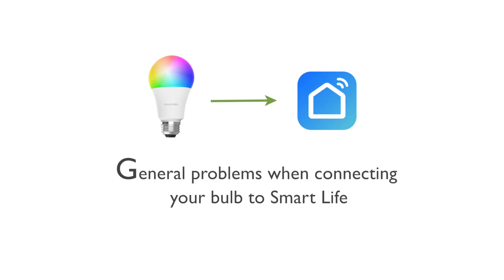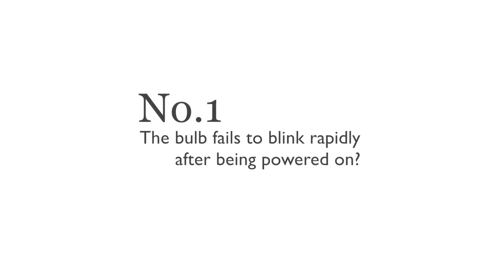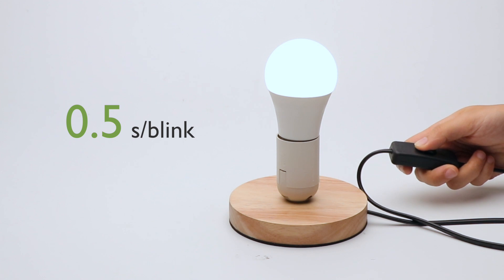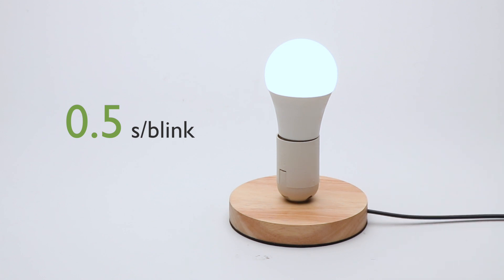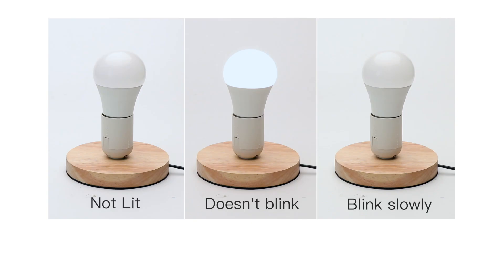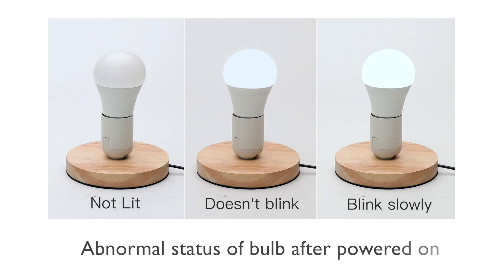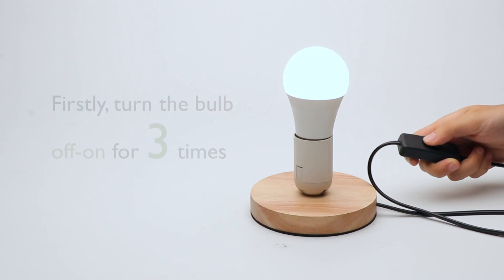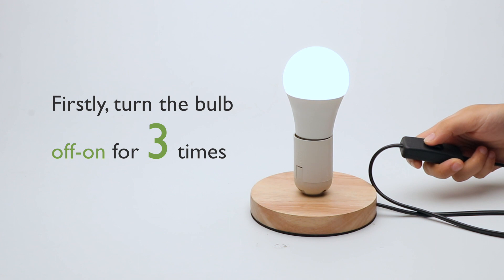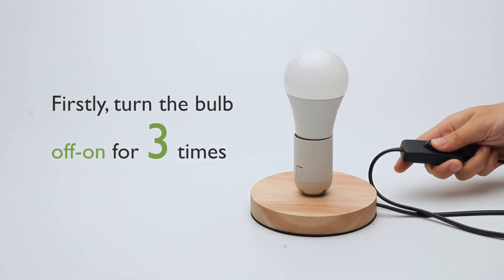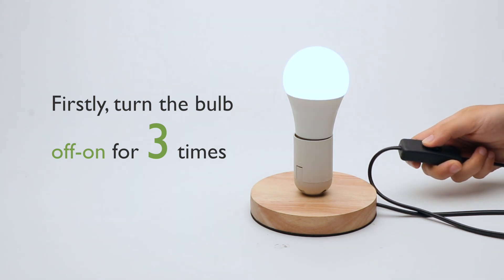Here are the general problems you might encounter. Number 1: the bulb fails to blink rapidly after being powered on. Normally the bulb should blink rapidly after being powered on. If your bulb is not lit, doesn't blink, or blinks slowly, please try the following: turn the bulb off and on three times until it enters into rapid blinking status.